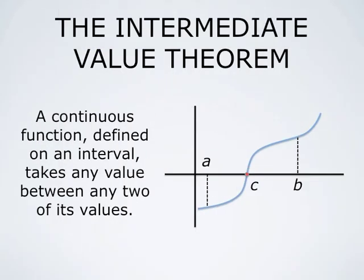Bolzano's theorem is usually used in the form of the Intermediate Value Theorem, which states that a continuous function defined on an interval takes any value between any two of its values. A very powerful result in the theory of continuous functions.